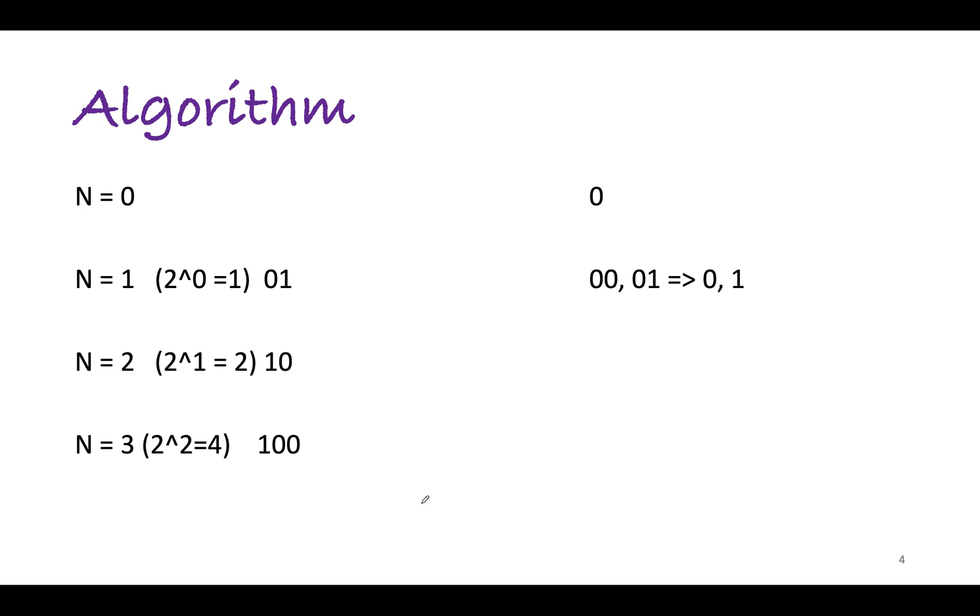So now let's talk about the algorithm that we are going to follow. Let's try and understand it by a few test cases. Let's assume n is given to us as 0 and the answer would become 0. n is given to us as 1.